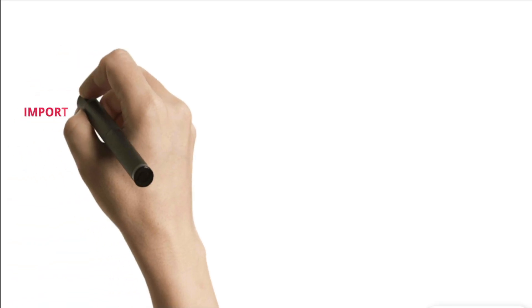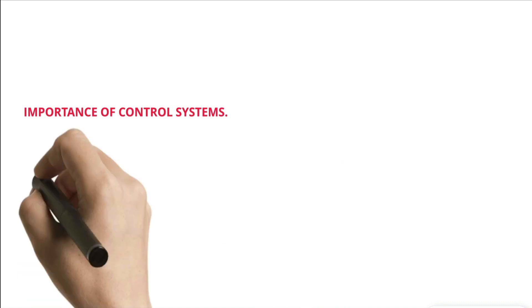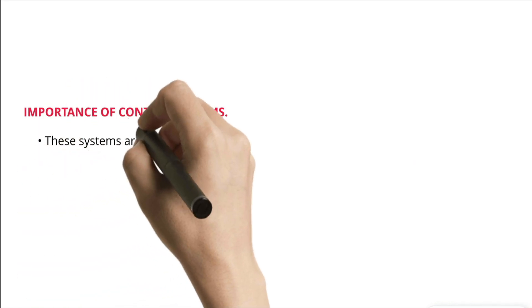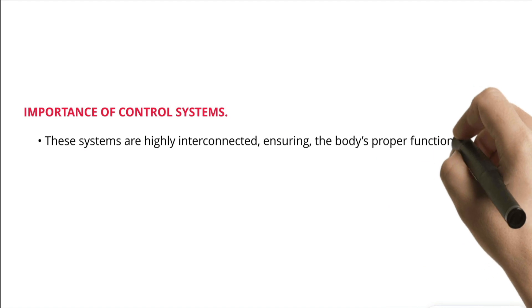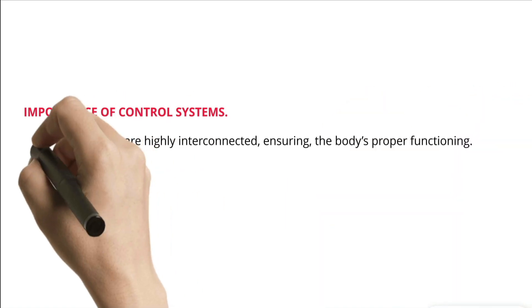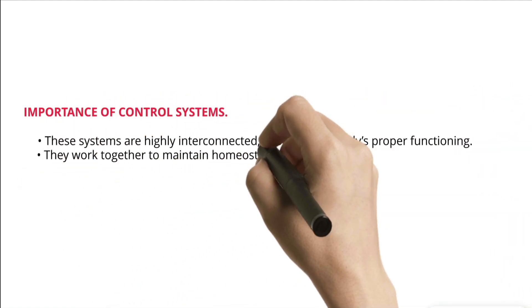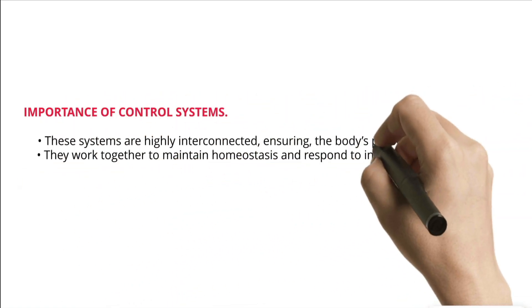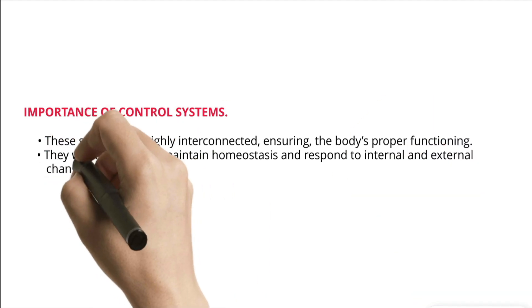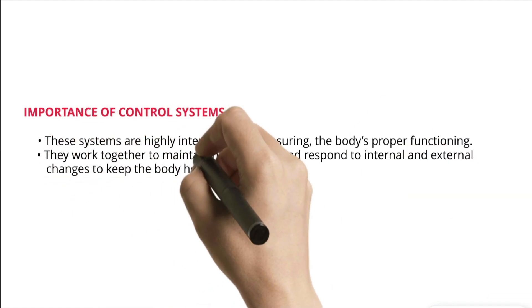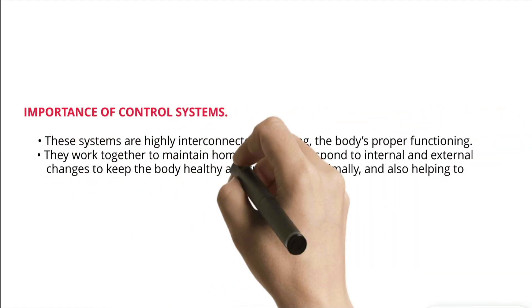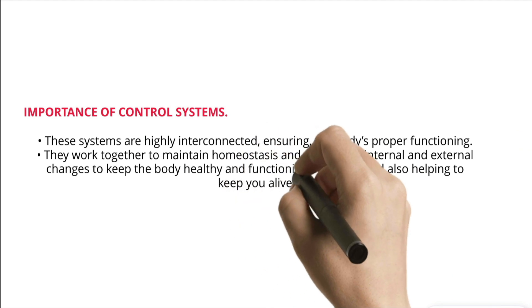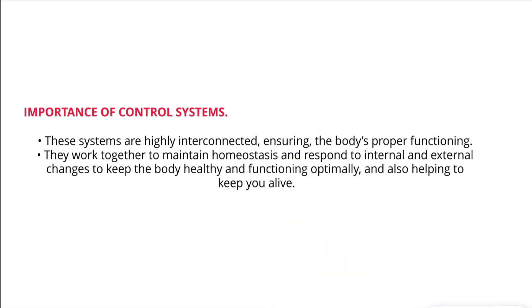Importance of control systems: These systems are highly interconnected, ensuring the body's proper functioning. They work together to maintain homeostasis and respond to internal and external changes to keep the body healthy and functioning optimally, and also helping to keep you alive.